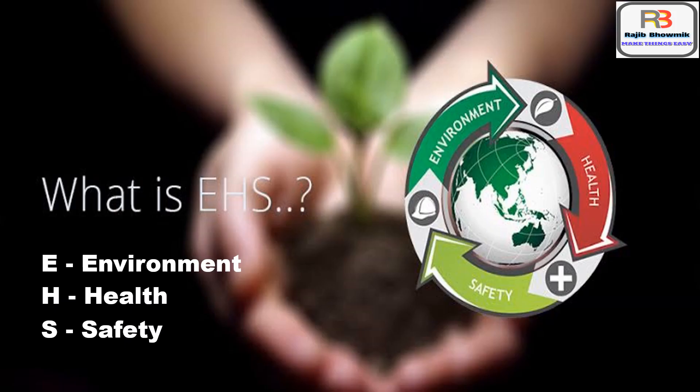We will start one by one. Number one is what is EHS. E is for Environment, H is for Health, S is for Safety. Environment means creating a systematic approach to complying with environmental regulations. Health means having working practices and systematic activities that prevent or reduce the risk of harm to people. Safety means creating organized efforts and procedures for identifying workplace hazards and reducing accidents.